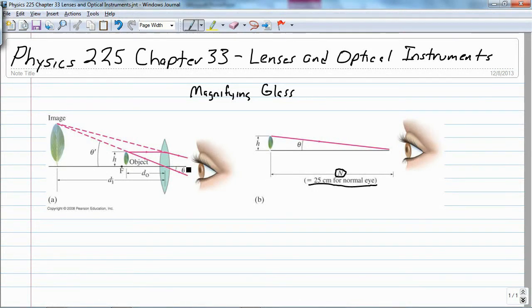Now, if we put a lens in front of the eye for magnifying glass, and we do the calculations here, then what we find is that the magnification, we'll use capital M, is equal to this n value of 25 centimeters divided by the focal length of the lens. And that's if we're just sitting there looking at it. We're not really trying to focus in on it.